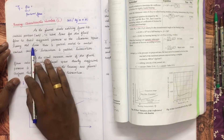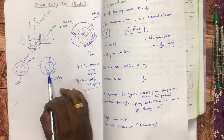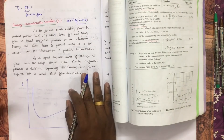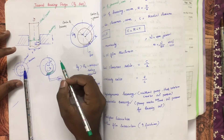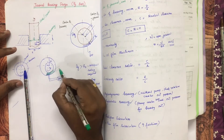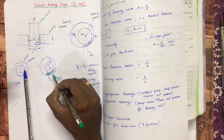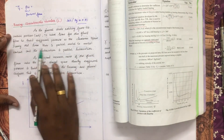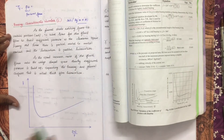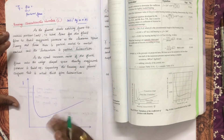It takes time for the fluid film to build sufficient pressure in the clearance space. As you rotate the shaft, how do you develop pressure in the clearance space? During this time, there is partial metal-to-metal contact in the journal bearing housing. The lubrication during this phase is partial lubrication.